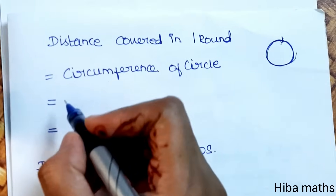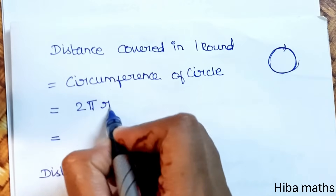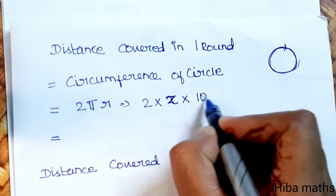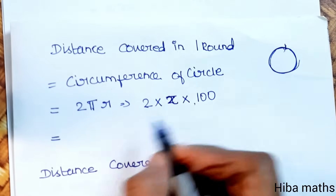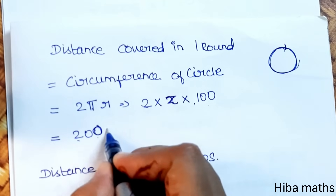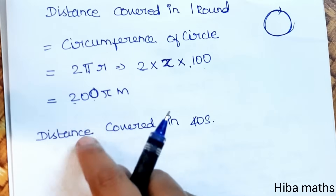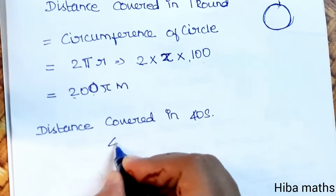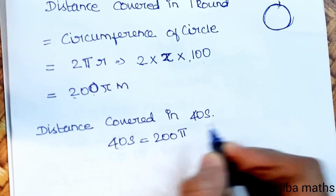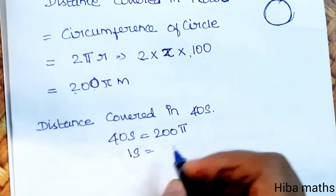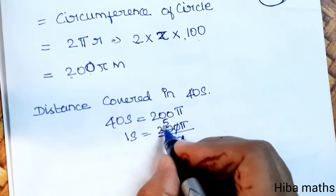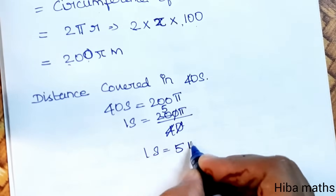Circumference of a circle formula is 2πr. That is 2 into π into 100, so the distance covered in one round is 200π meters. Distance covered in one second is 200π divided by 40, which simplifies to 5π meters per second.